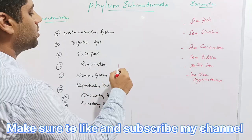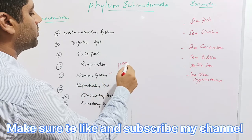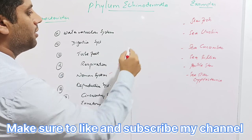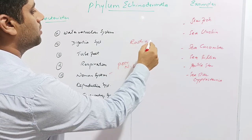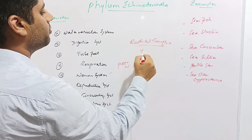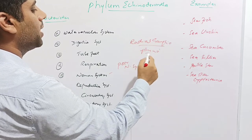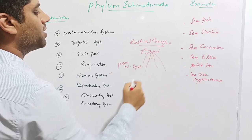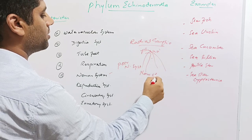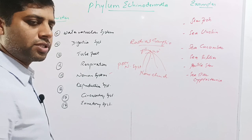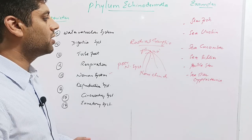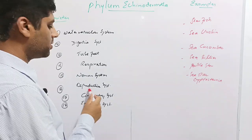Echinoderms have a poor nervous system. They have radial ganglia which surround the pharynx, and nerves called nerve cords arise from this radial ganglia. These nerve cords control the whole body.